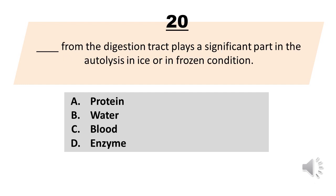Blank from the digestion tract plays a significant part in the autolysis in ice or in frozen condition. A. Protein. B. Water. C. Blood. D. Enzyme. The correct answer is Letter D, Enzyme.